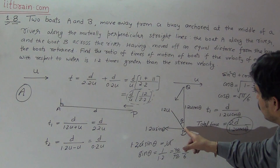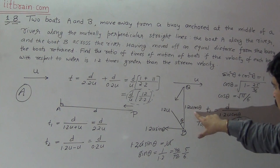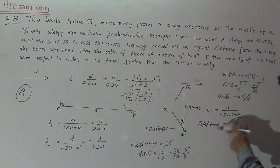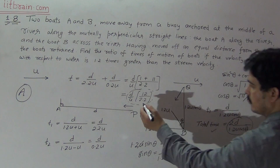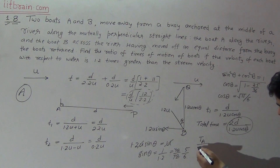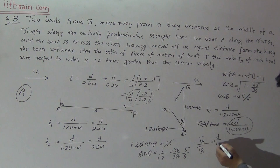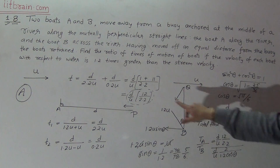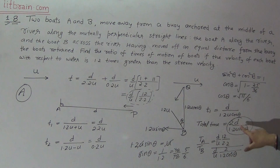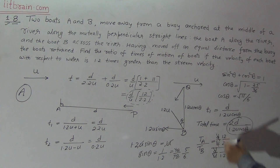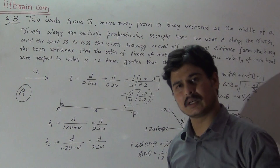Time taken to cross the river along BQ is D over 1.2U·cos θ, and total time for B is 2D / (1.2U·cos θ). The ratio of time taken by A to time taken by B is: [(D/U)·(12/2.2)] / [(2D) / (1.2U·cos θ)]. Cancel D/U, substitute cos θ = √11/6, and compute to get the final answer.